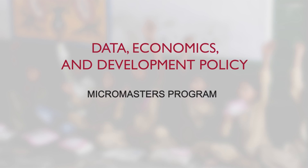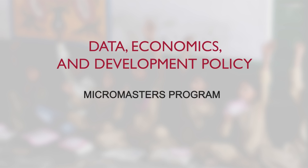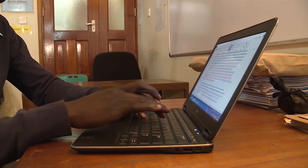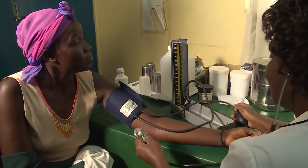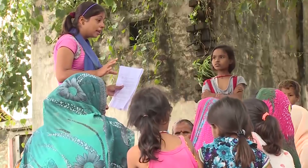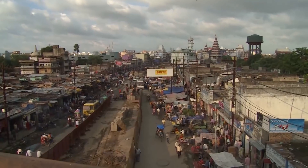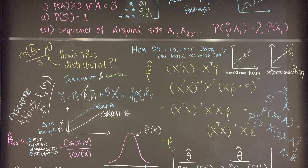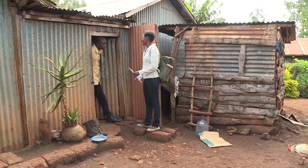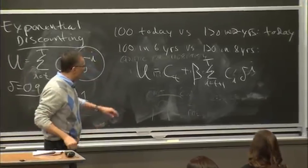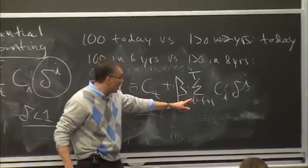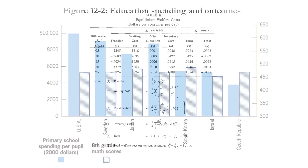MITx's new MicroMasters program in Data Economics and Development Policy aims to equip students with the knowledge and the skills to approach some of the most pressing challenges facing developing countries and the world's poor. It consists of a sequence of five courses that balance theoretical knowledge with practical skills, combining real-world tools in program evaluation and policy design with a deep understanding of the economic and mathematical principles behind them.